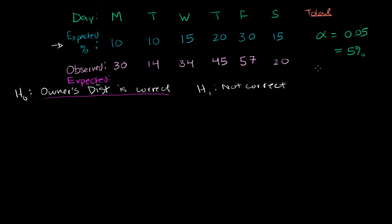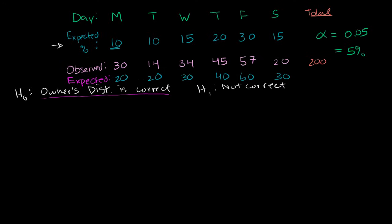With 200 total customers, the expected counts are: Monday 10% × 200 = 20; Tuesday 10% × 200 = 20; Wednesday 15% × 200 = 30; Thursday 20% × 200 = 40; Friday 30% × 200 = 60; Saturday 15% × 200 = 30. So if the owner's distribution is correct, these are the expected customer counts per day.